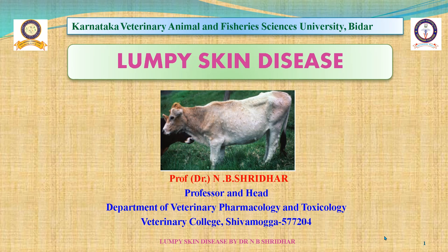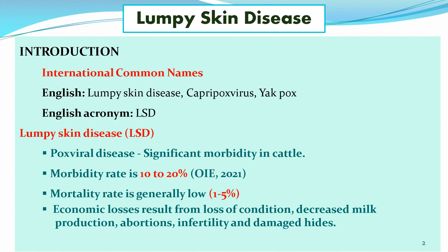Lumpy Skin Disease is one of the important diseases of cattle and it is spreading in and around India and other countries. It has international common names — in English it is called Lumpy Skin Disease, also known as Capripox or Yak pox. The English acronym is LSD, and it is caused by a pox viral disease causing significant morbidity in cattle.